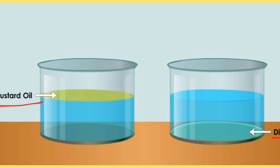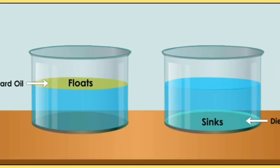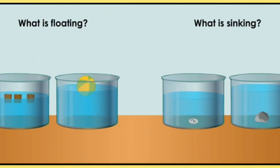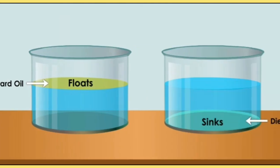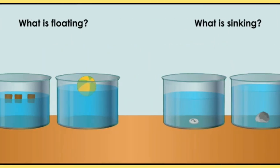With liquid mustard oil and diesel, you can see that mustard oil floats and diesel sinks in water. Both are insoluble — neither dissolves — but one is on top and the other forms a layer underneath, showing that insoluble liquids can also have different floating and sinking properties.